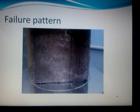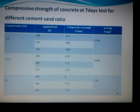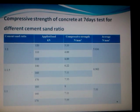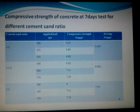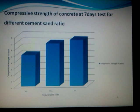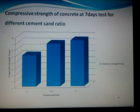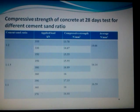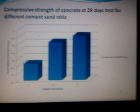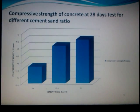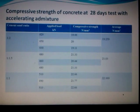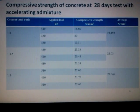This shows the failure pattern of the lightweight concrete cube. Compressive strength at 7-day testing for different cement-sand ratios: 1:1 gave 7.55, 1:1.5 gave 6.960, and 1:2 gave 5.026 MPa. At 28-day curing, compressive strengths are 14.66, 16.14, and 16.59 MPa. After adding the accelerating admixture, compressive strength increased to around 21.03 and 22.359 MPa.